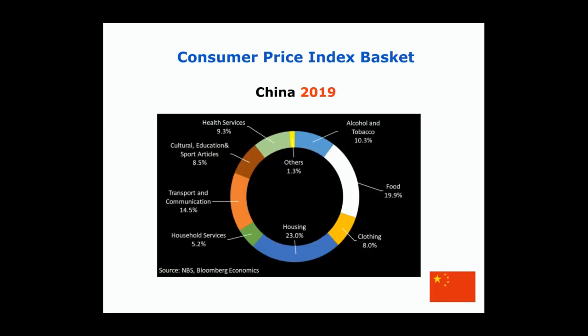Here you can see a comparison using data from China from 2019. This kind of activity is done in each country, and the market basket might be different because the countries are different. China spends less on housing — about 23% — about the same on transportation, more on food, and they have a separate category for alcohol and tobacco. So you can construct this basket depending upon which economy you're talking about.